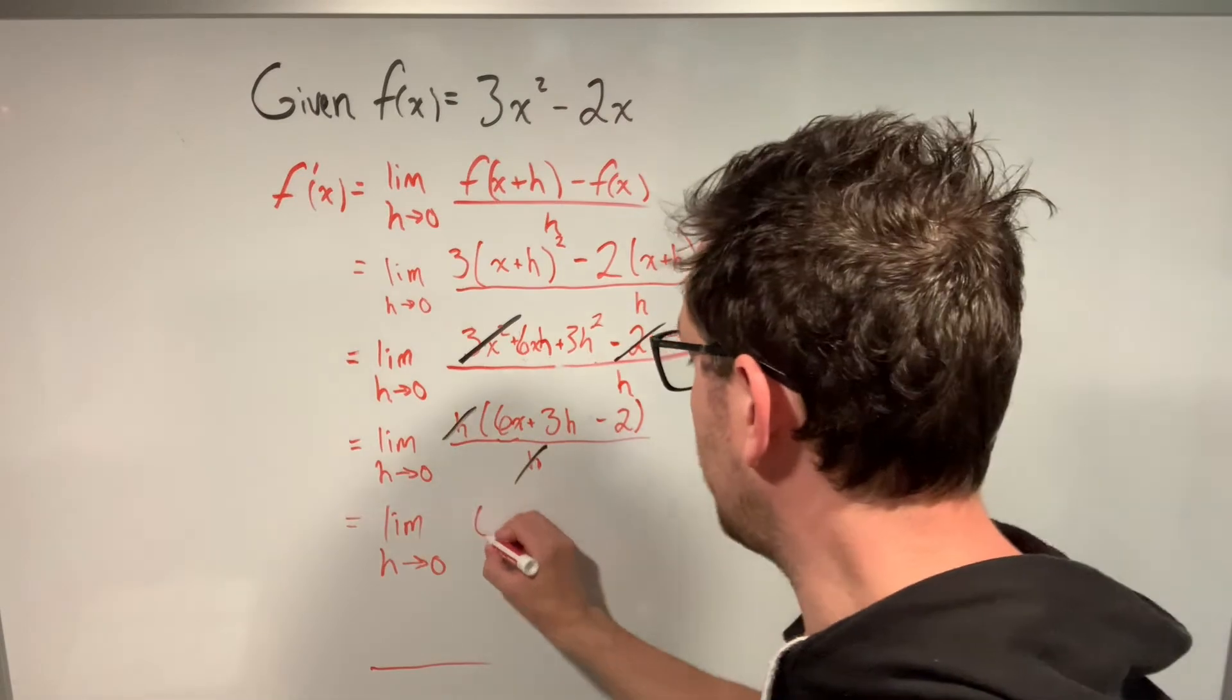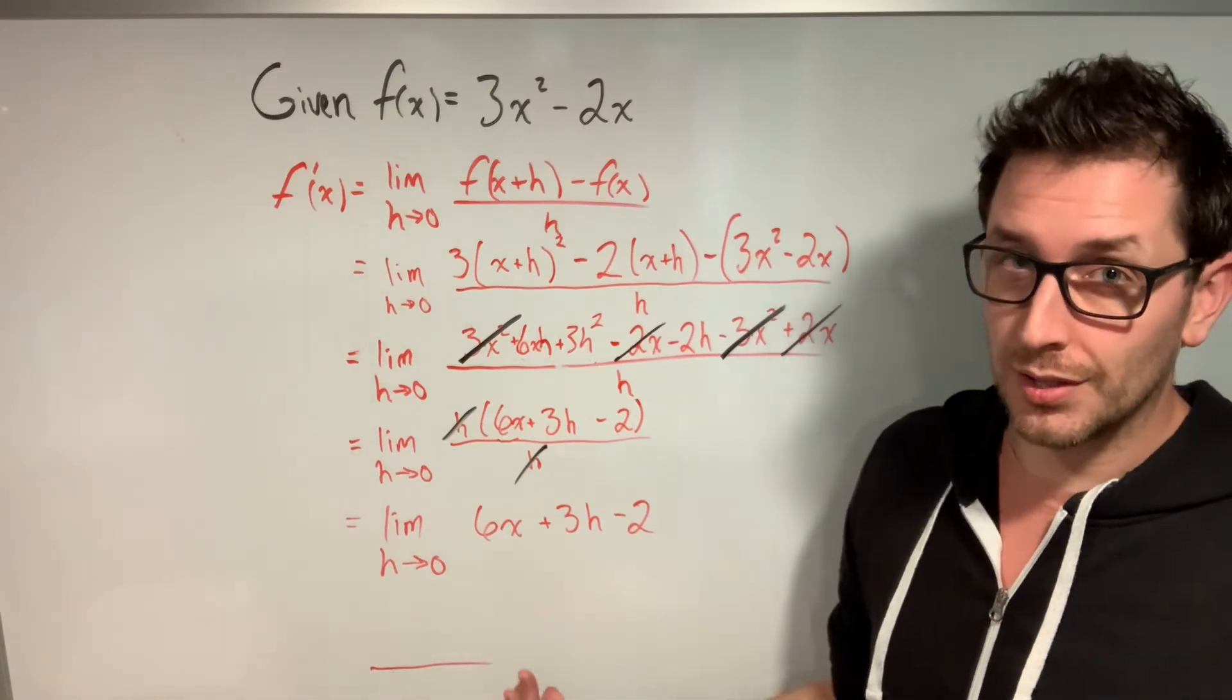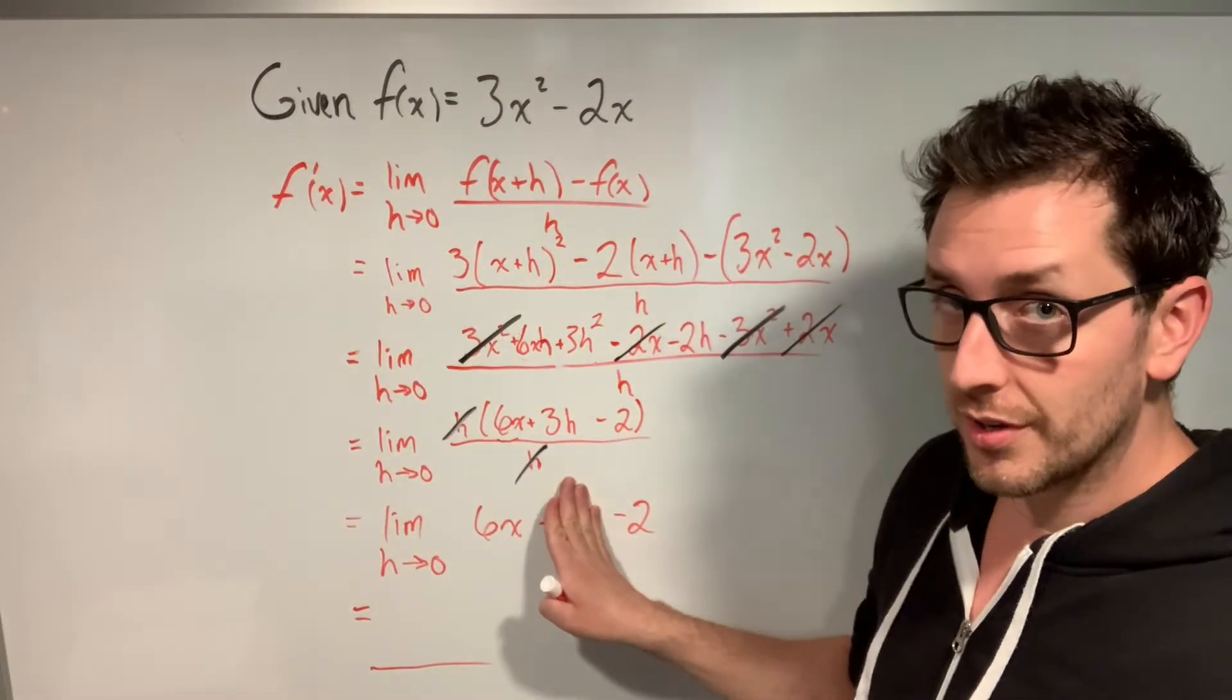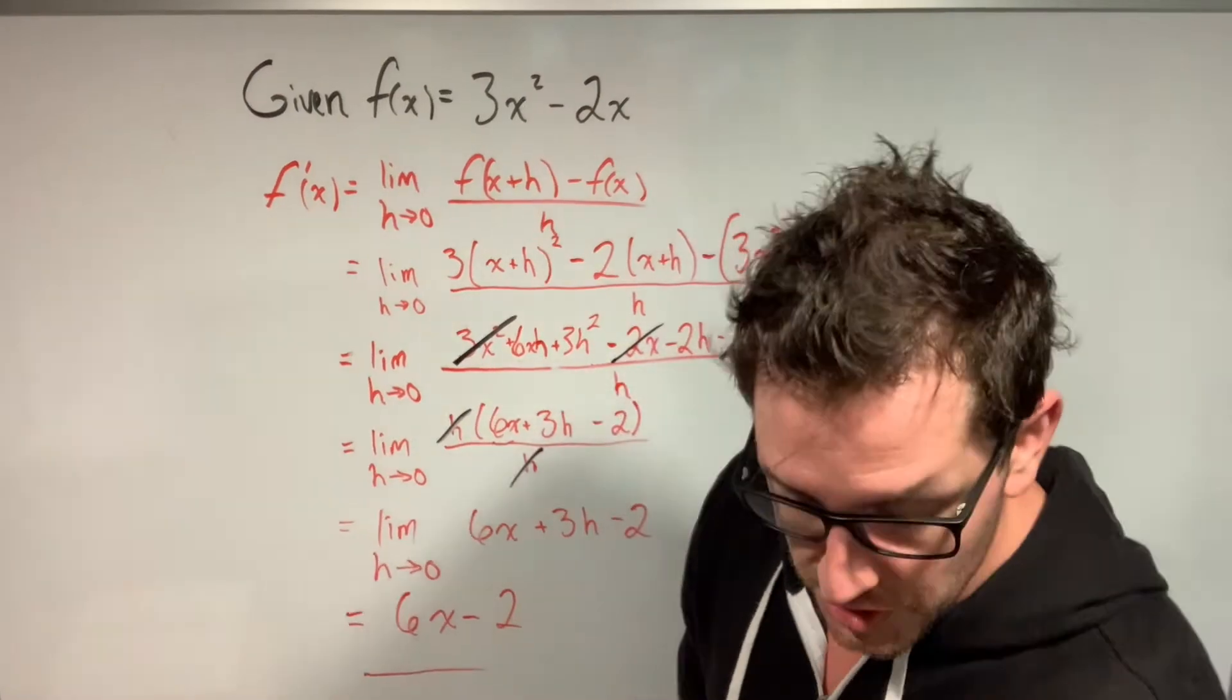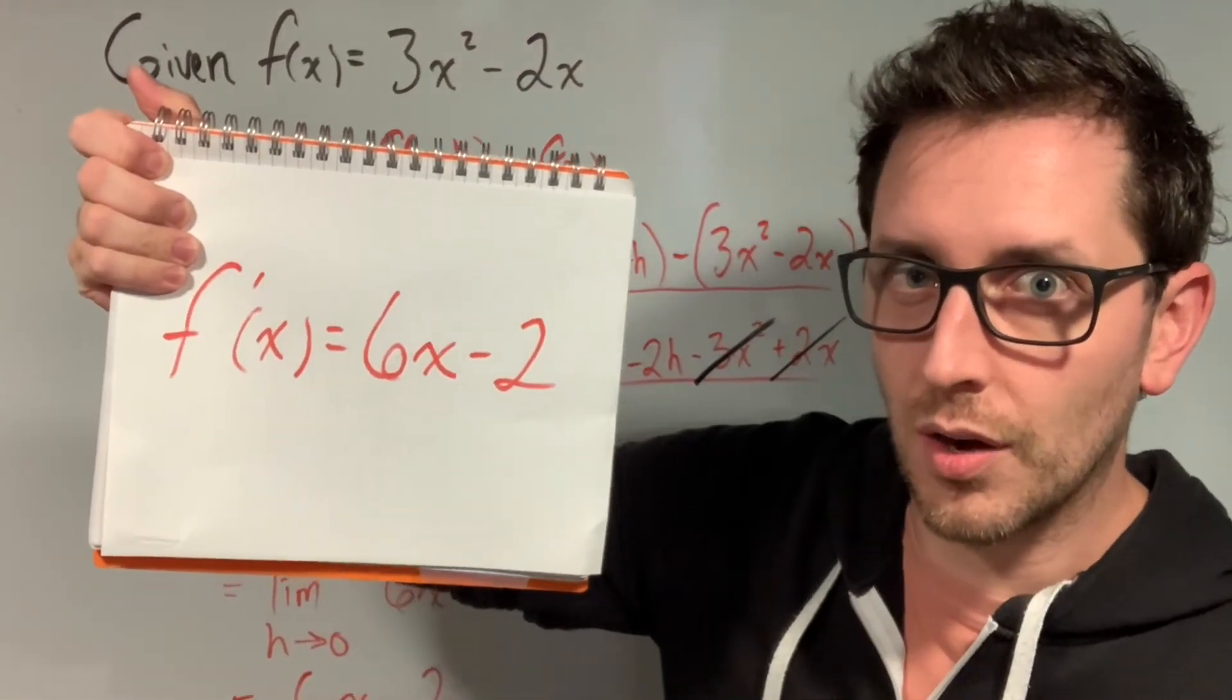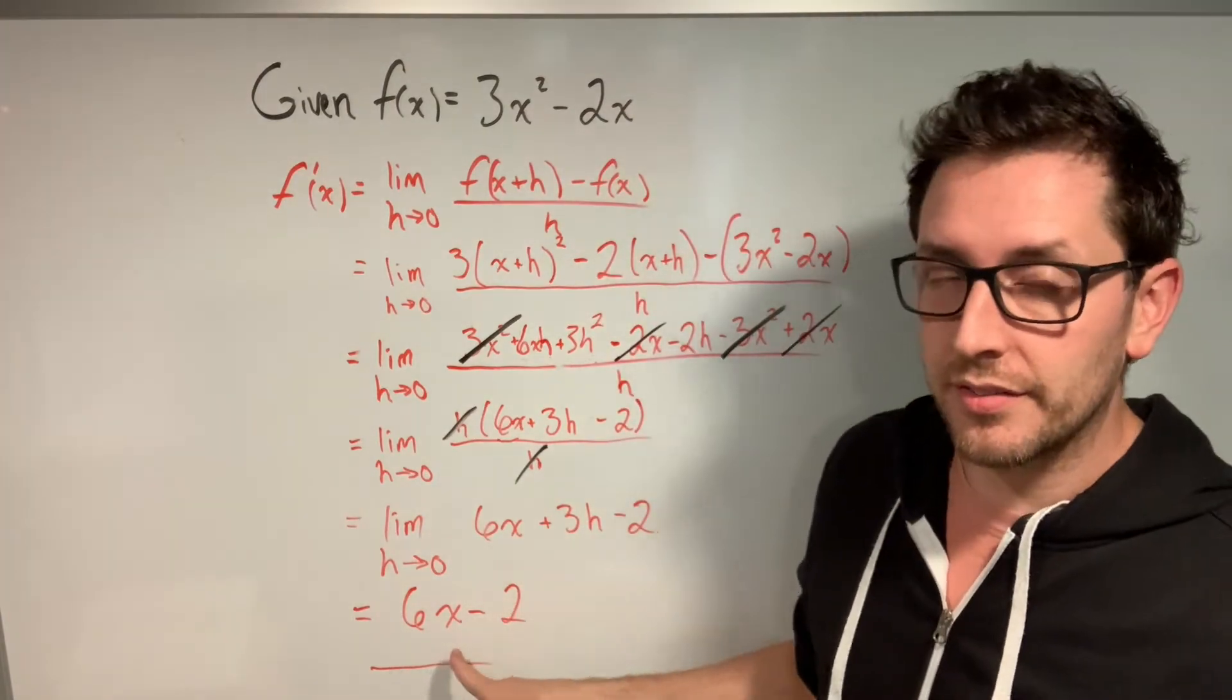So what are we left with? Well, we have 6x, we're adding 3h, and we're subtracting 2. Now, are we at a point where we can evaluate our limit? Yeah. When we take zero and we put it in for h, this term is going to disappear. And sure enough, we are left with 6x - 2, which, as you may recall, is the exact expression that I wrote down at the beginning of this video. So after all of this long, pretty tedious work, we arrived at a derivative of 6x - 2.